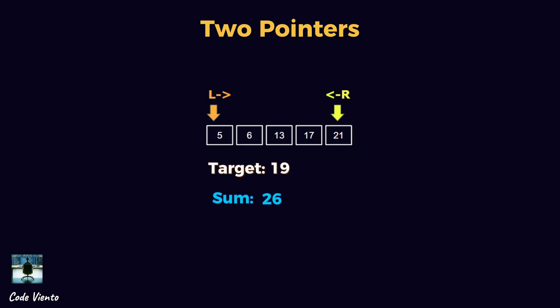A typical example is finding two numbers in a sorted array that sum to a target value. Here, one pointer starts at the beginning and the other pointer at the end. Based on the sum of the elements at the pointers, you move one pointer inward to quickly find the correct pair. Using this technique means you don't need nested loops, which makes your solution much faster than a brute force method.